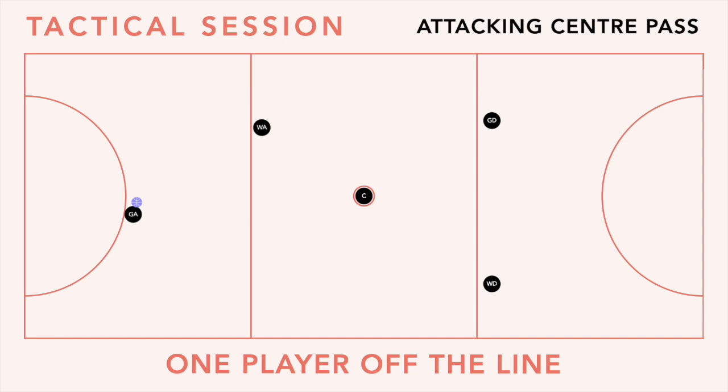You could also work with your goal shooter driving out, the wing attack and the goal attack going pocket or post. You can play around and see what your athletes prefer, but for this one first phase is the player off the line and second phase is always top of the circle.